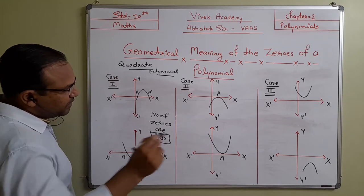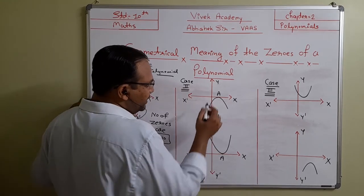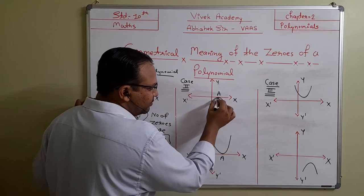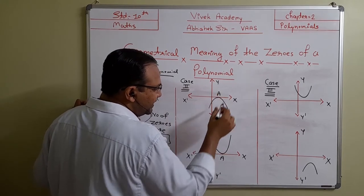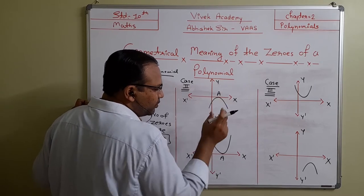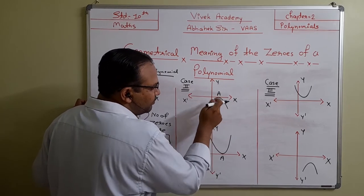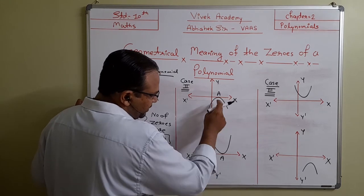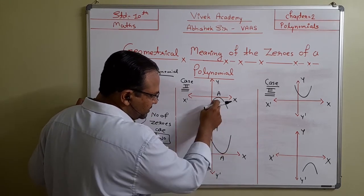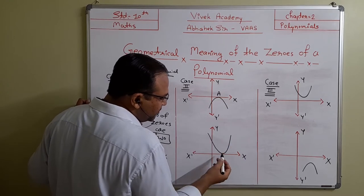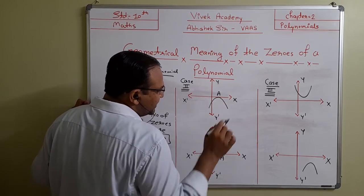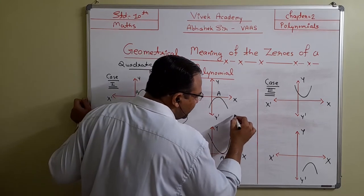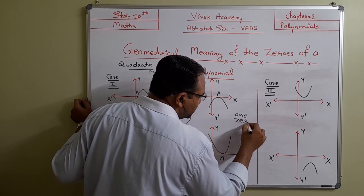In case number two, the parabola is exactly touching the x-axis at only one point. Here A and A dash are both coinciding or overlapping at one point only. Whether the parabola is open upwards or downwards, it is touching the x-axis at one point only — so A and A dash coincide, giving us only one zero.